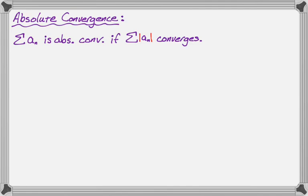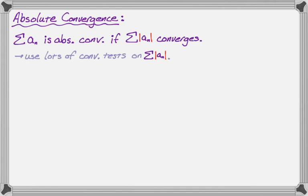It's kind of a weird thing to do, but it basically creates an easier problem because when you take the absolute value of the nth term, you don't have to deal with things that alternate or maybe only kind of alternate. So one of the things that happens is you can now use lots of the convergence tests — basically any of the convergence tests that required only positive terms. So that's a really good thing.